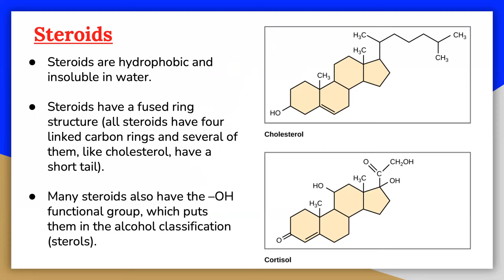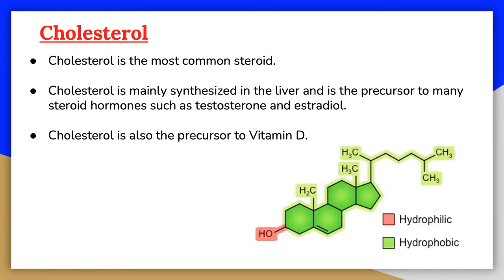Many human hormones, as well as cholesterol, are steroids, which are lipids characterized by a carbon skeleton consisting of four fused rings. Different steroids vary in the chemical groups attached to this group of rings.